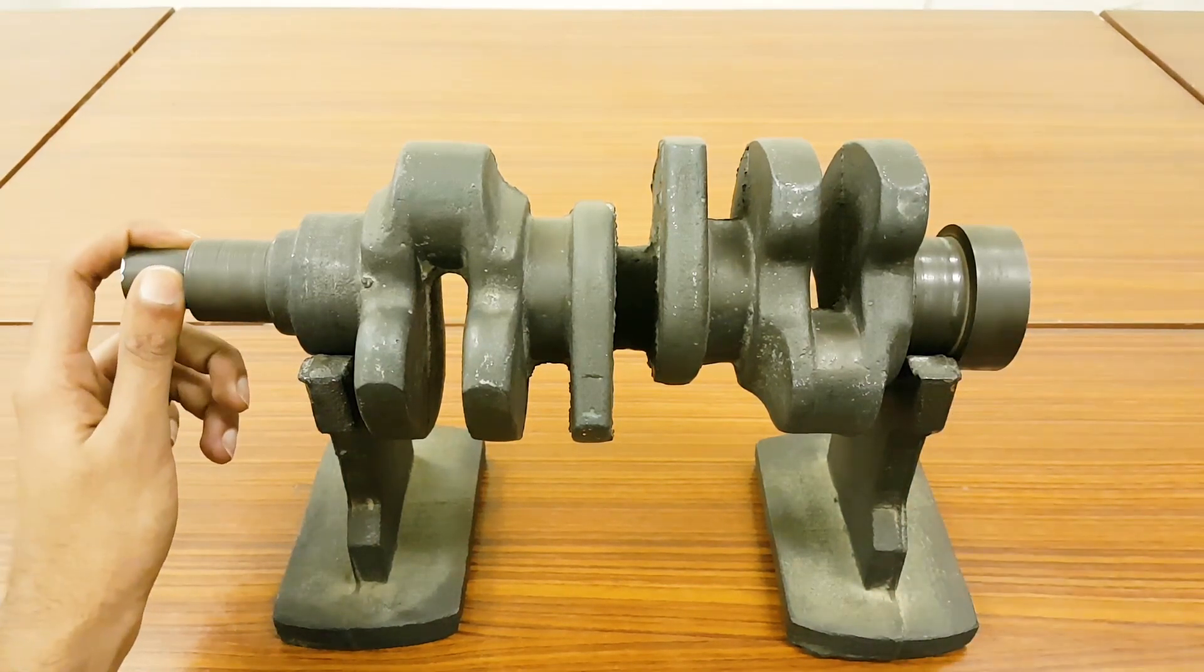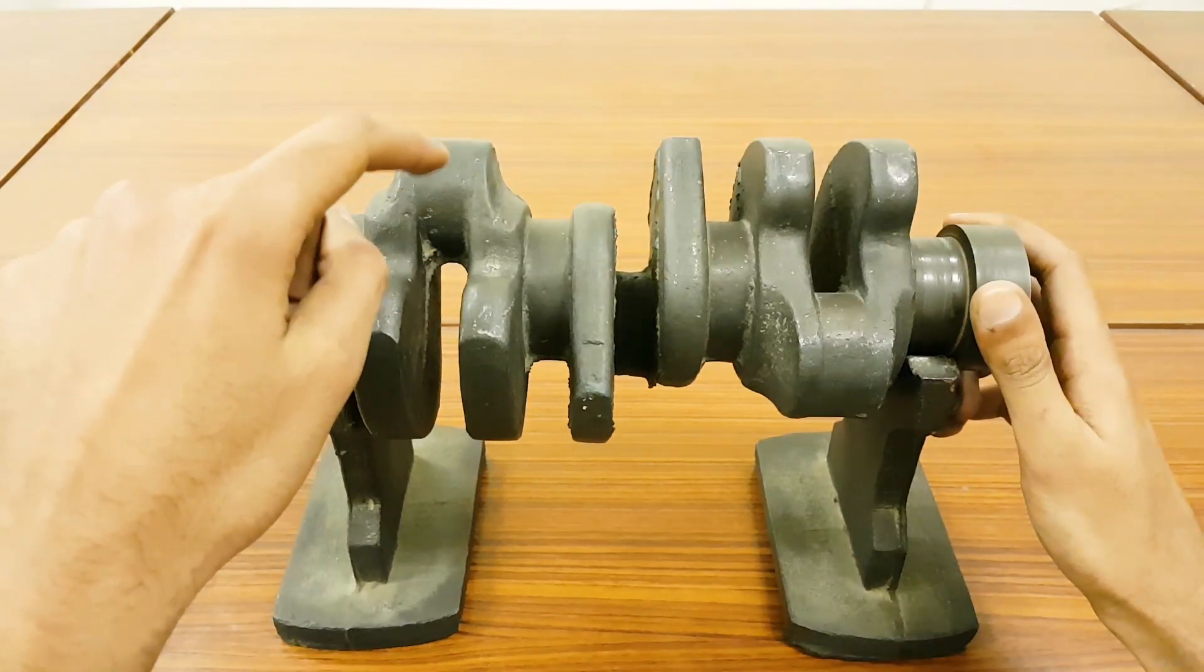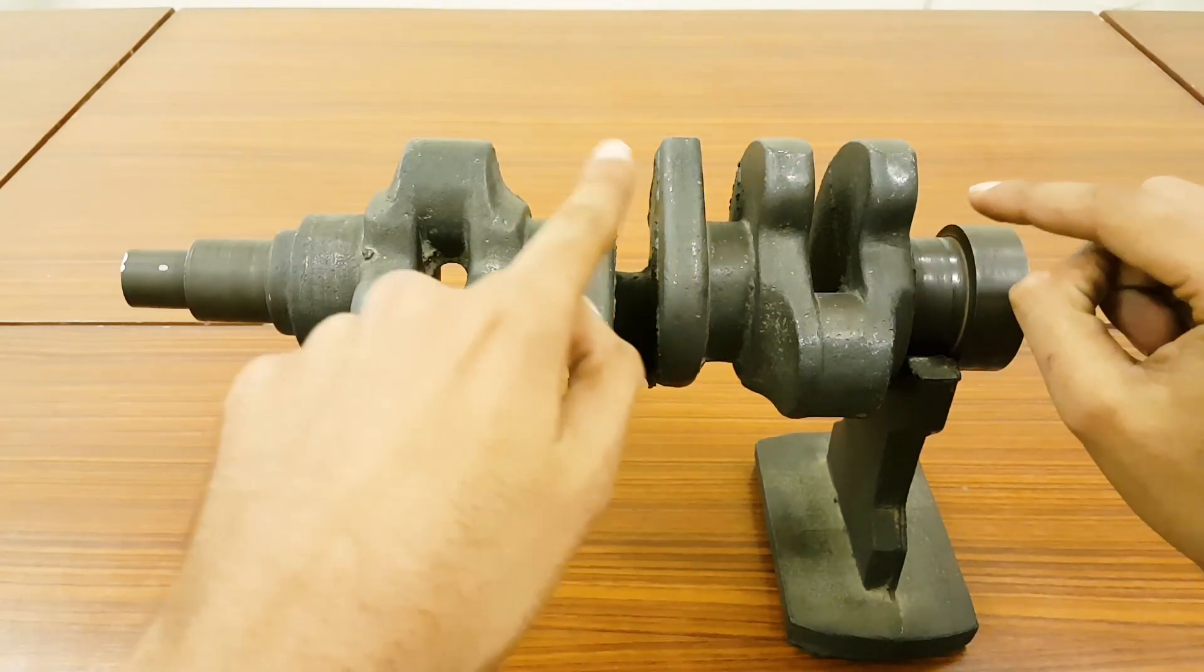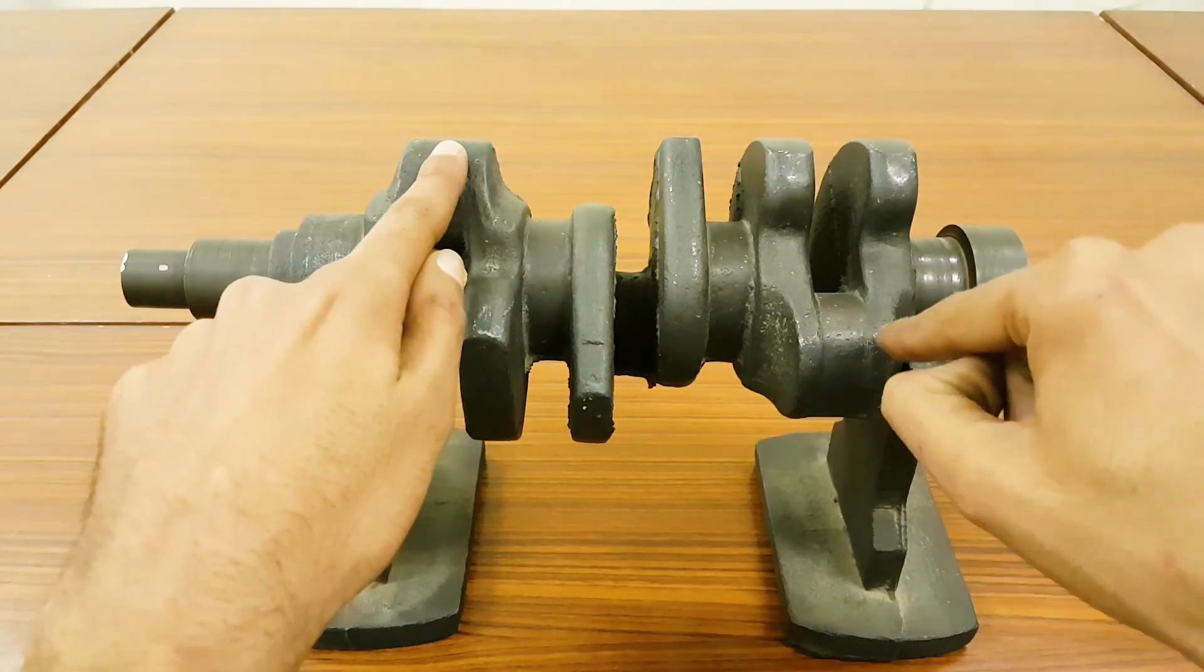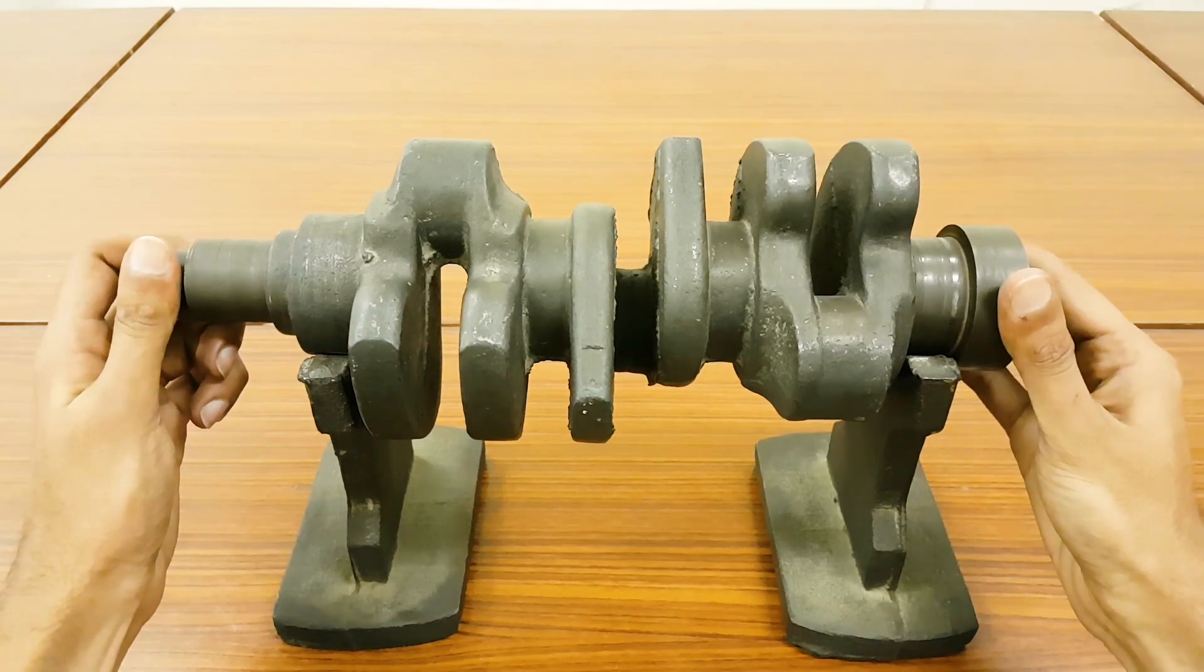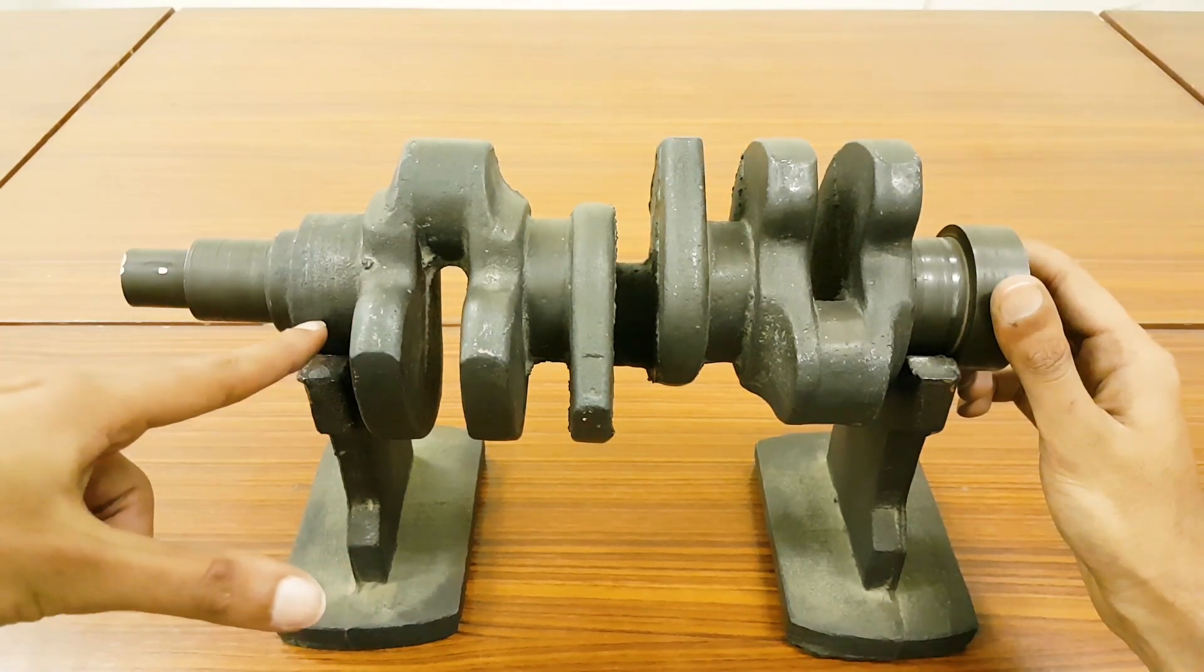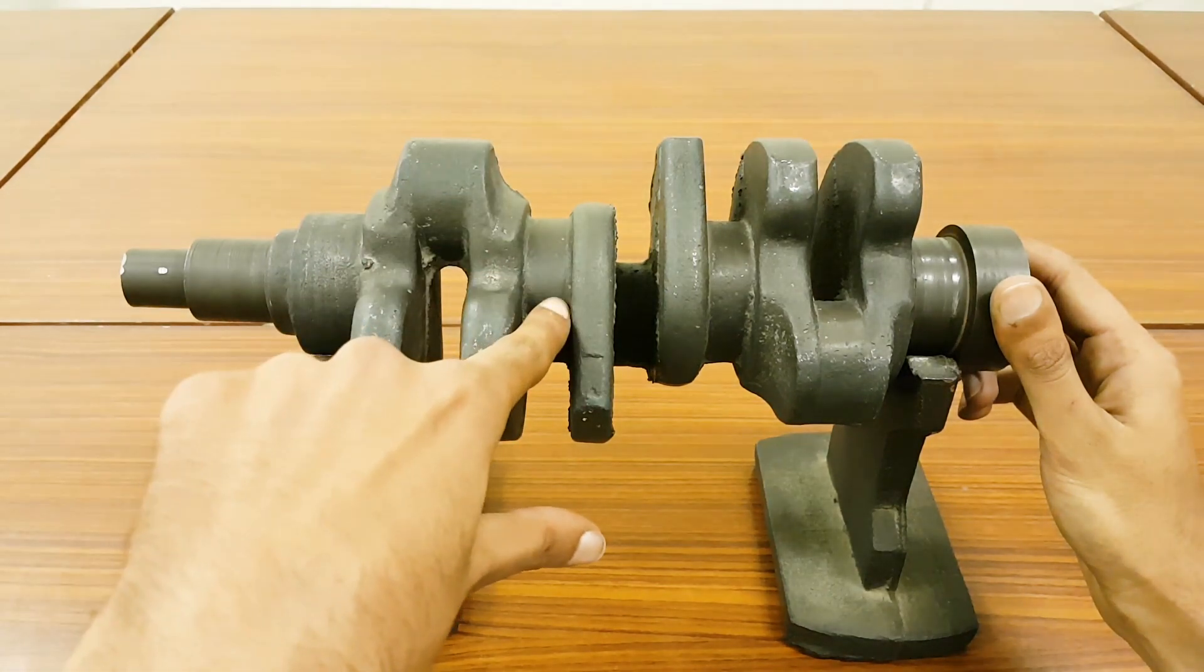Adding on one more thing, you will find drills in all of these journals - in these four main journals as well as these three crank pin journals. Why are those holes drilled inside?